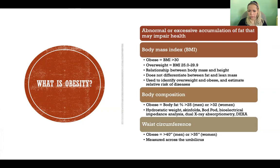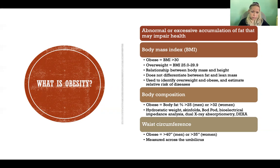The most common method used is the body mass index, or BMI. In somebody who does have an excessive amount of fat accumulation, the BMI is fairly accurate. BMI is an expression of the relationship between body mass and height — so essentially a higher BMI means a greater amount of mass relative to the height of the person.